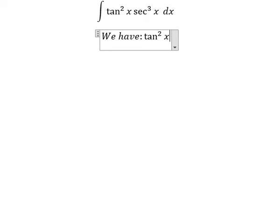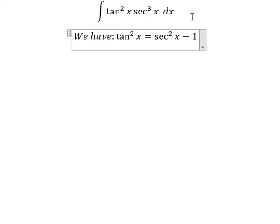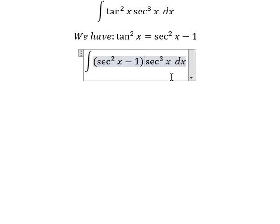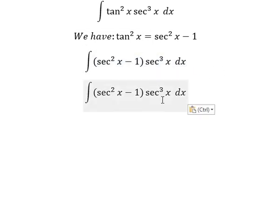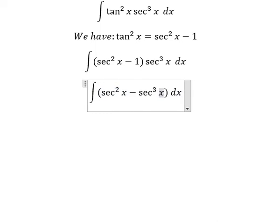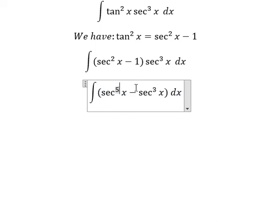We have the formula in here. That's about tan²x equals secant²x minus 1. I will put this one going here, multiplied by secant²x. And we got secant x to the power of 5 minus secant x to the power of 3.